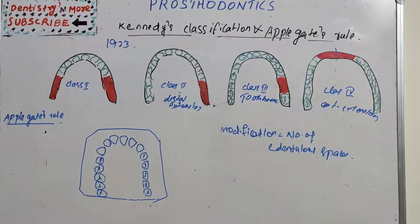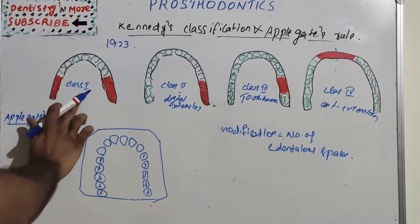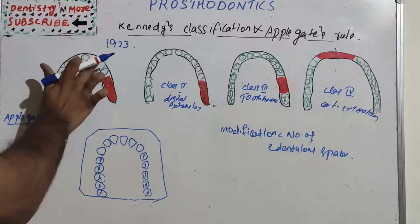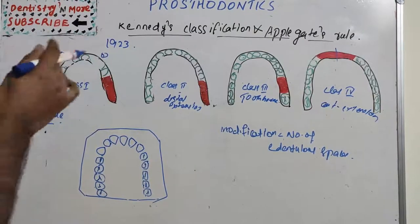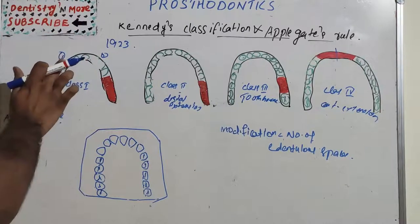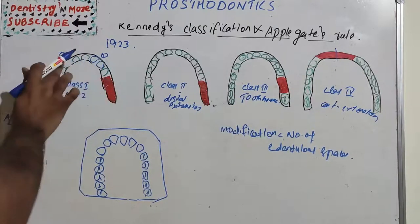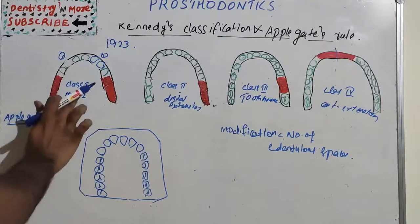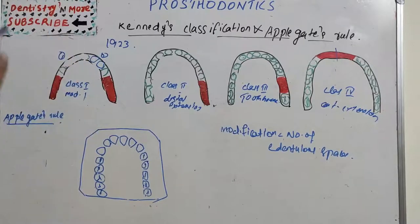There is no modification for Class 4. Modification is the number of edentulous spaces present. For example, in Class 1, if there is an additional missing tooth area with 2 spaces, that becomes Class 1 modification 2. If only one additional space is present, it is Class 1 modification 1. Even if multiple teeth are missing in that space, it is still modification 1 — because it is the number of spaces, not the number of teeth, that matters.